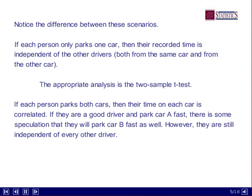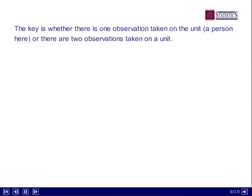However, if each person parks both cars, then their time on each car is correlated. For example, suppose I park car A in 18 seconds — it is very unlikely that I'm going to turn around and park car B in, say, 50 seconds. My other number will be in some small neighborhood around 18. So knowing my first number gives you a good idea of what my second number is; therefore those data points are correlated. Now, I'm still independent of the other 19 drivers. My two times — while the two individual times are correlated with each other — have nothing to do with what the next person's two times are. So the drivers are still independent of each other, but the two observations within a driver are not independent. The appropriate analysis is the paired t-test.